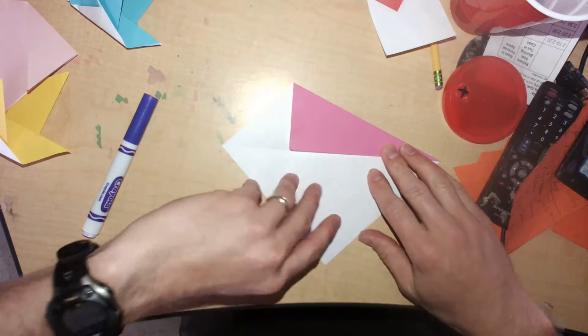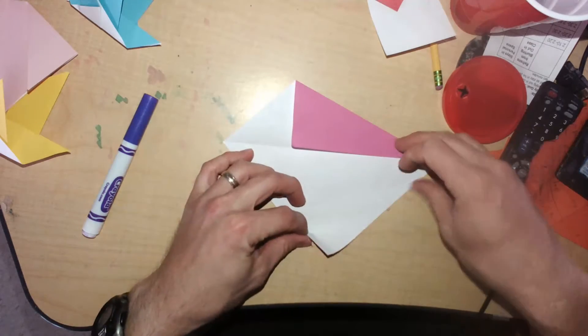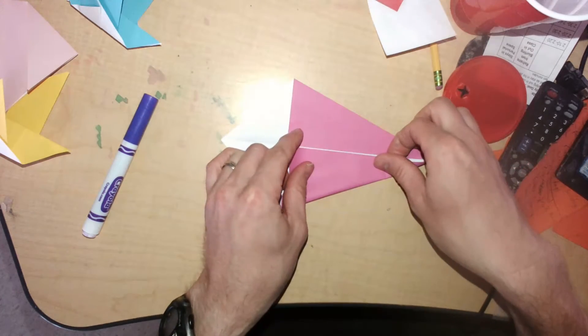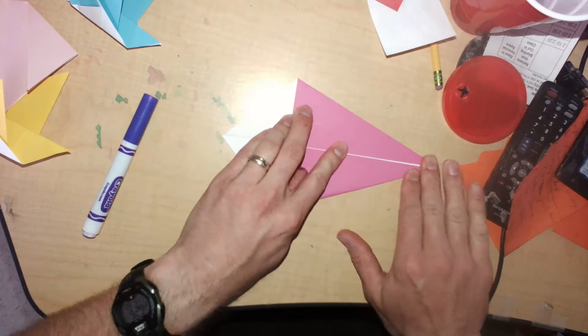And we're going to do the same for the bottom. This edge and have it meet that one. It makes this kind of kite shape.